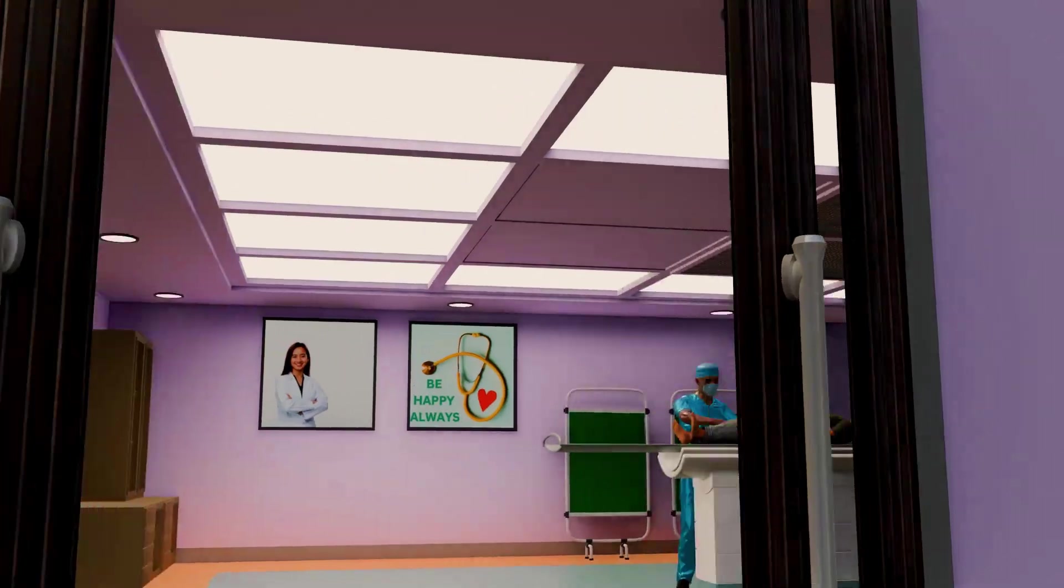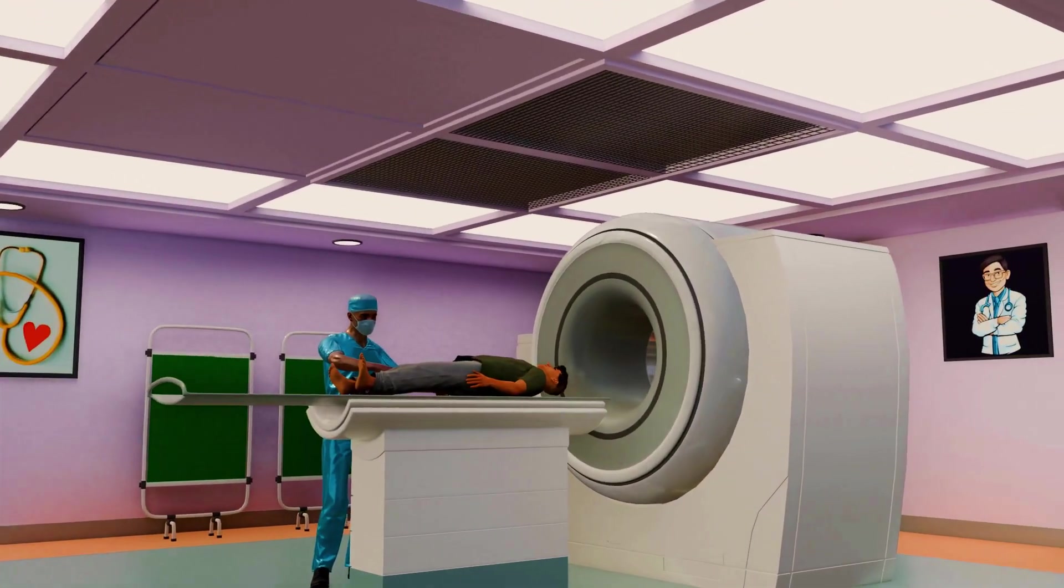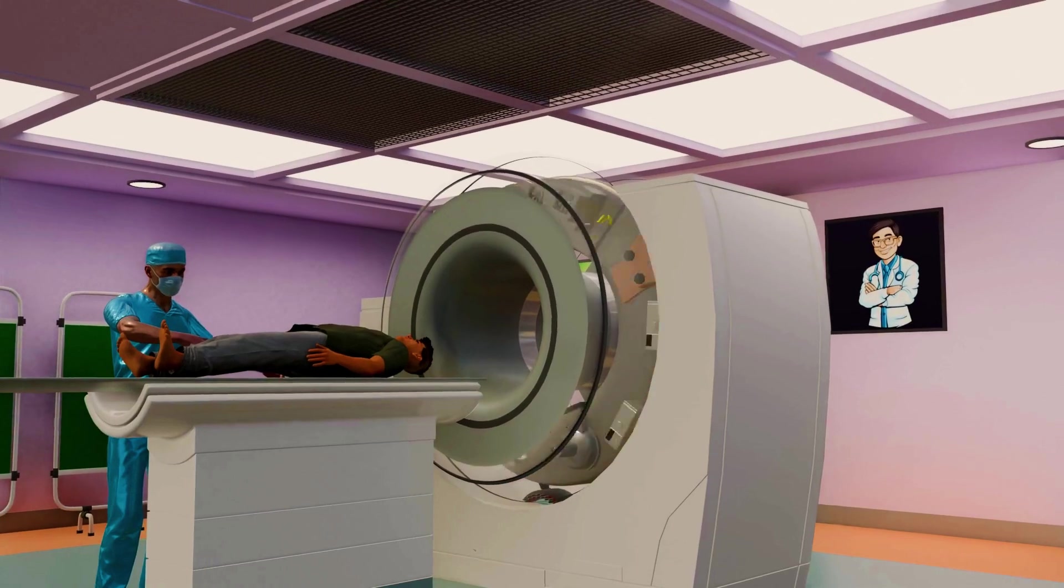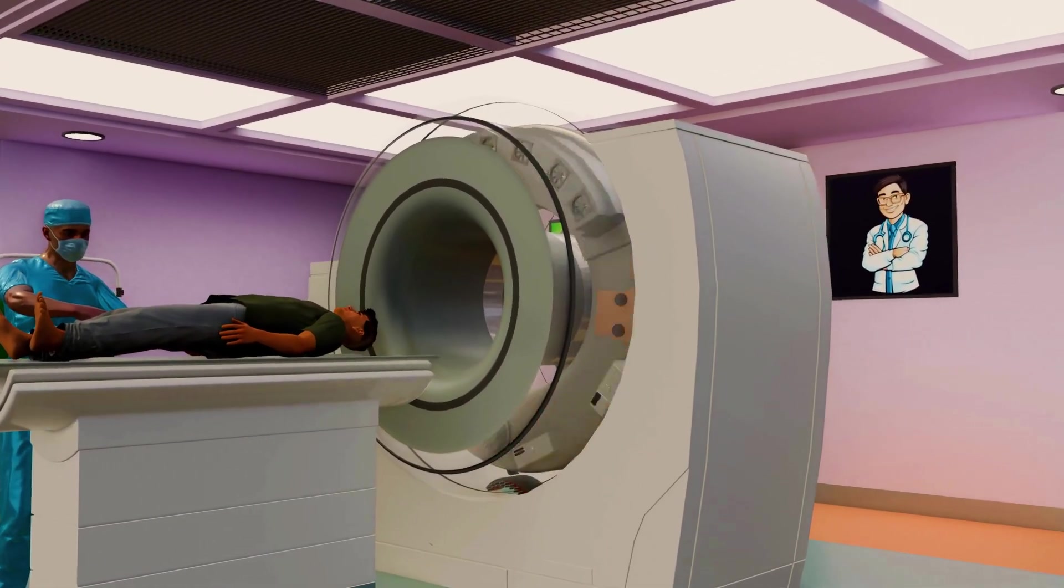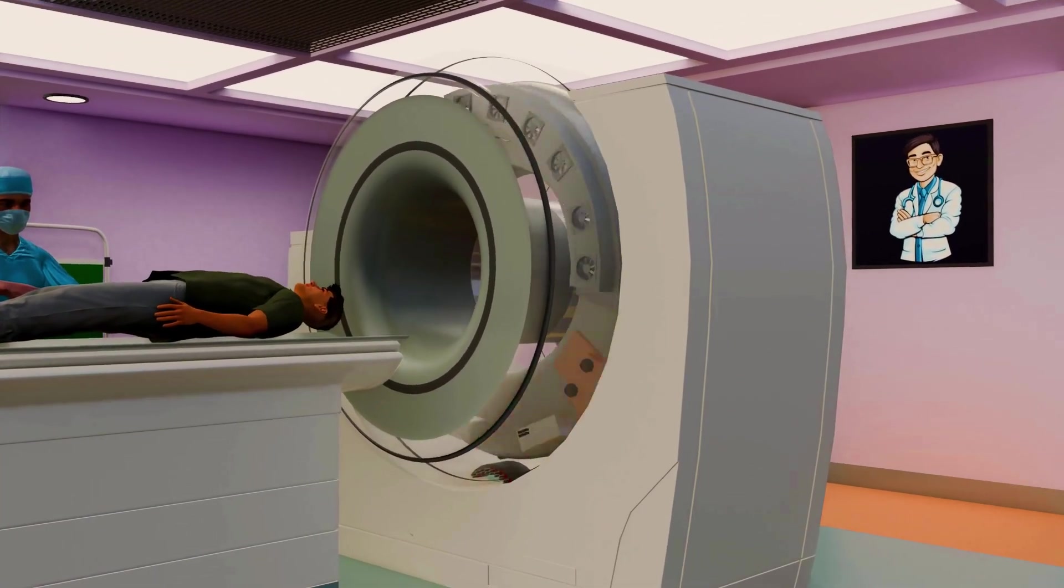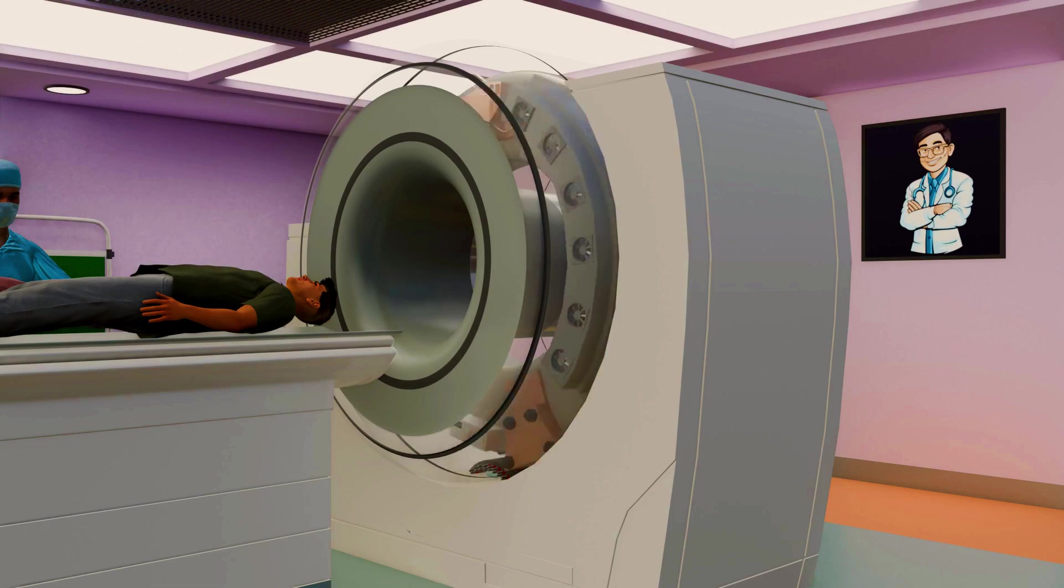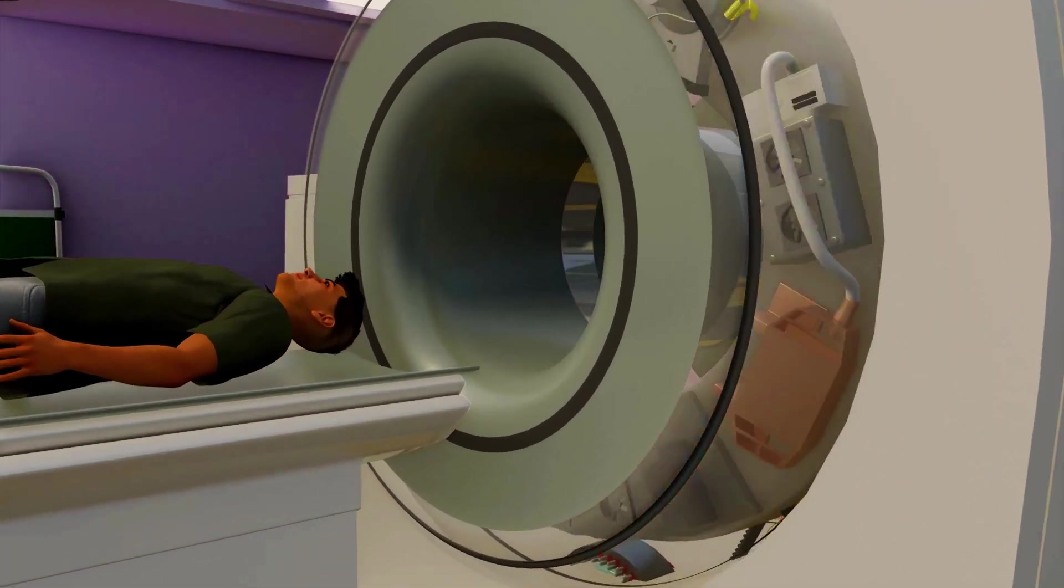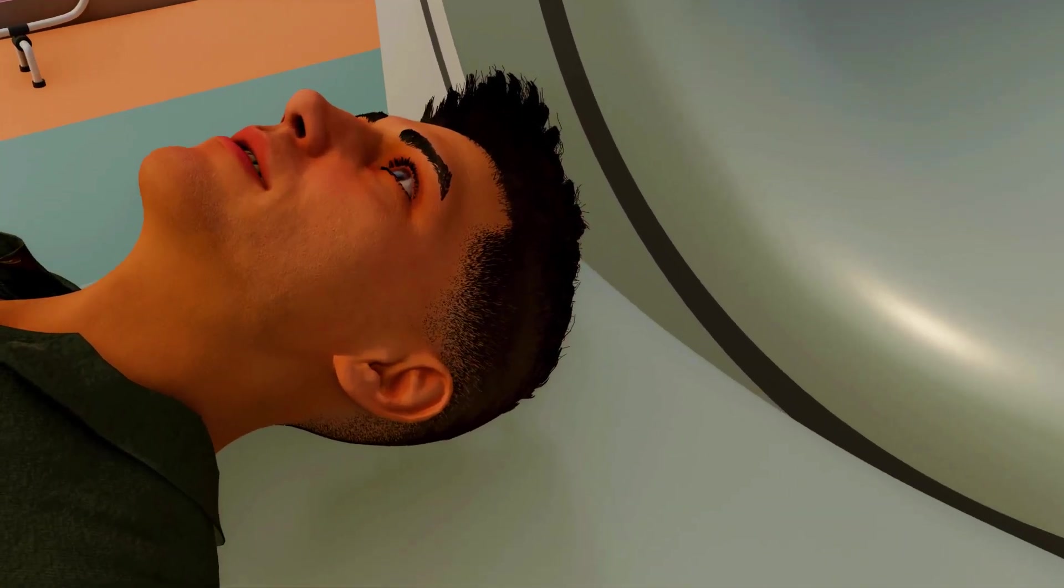A CT scan machine is essentially a rotating X-ray device capable of collecting thousands of X-ray samples in less than a second to create a 3D image. For example, consider a patient with a blood clot in the head that needs to be located.